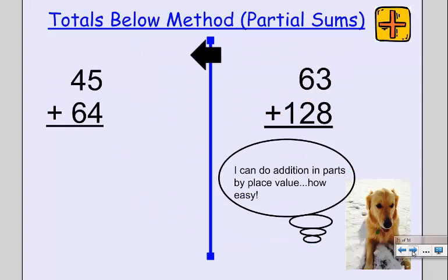This strategy is called the totals below method, or partial sums. I always look for words inside of the word, and I see the word 'parts' inside of the word 'partial'. So we're going to add these up in parts by their place value. Scoop says, how easy if I know my place values. Let's check it out.